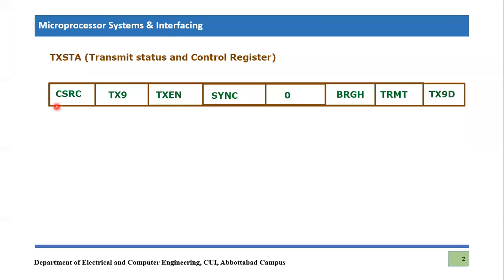So the very first bit that we have to consider is CSRC and that will basically always be treated as zero. That means you will always put here zero because it is clock source lag and this option will not be available for asynchronous mode. So we will be discussing only asynchronous mode of serial port communication. That is why we will always put it zero.